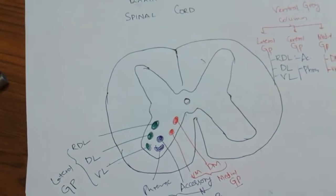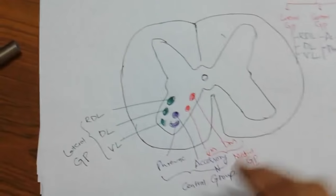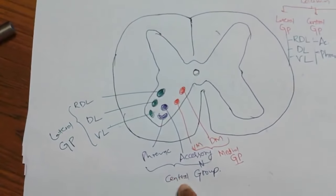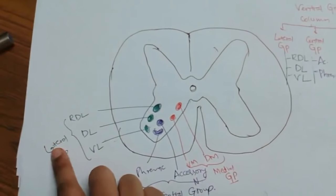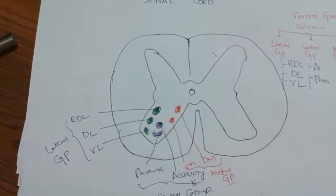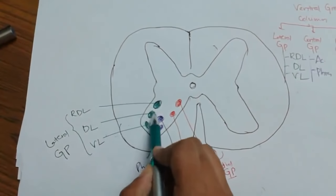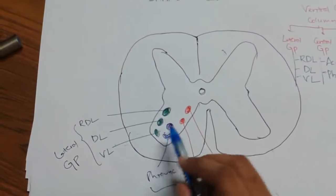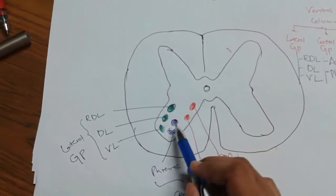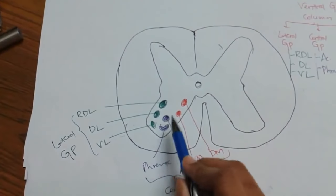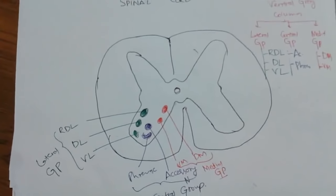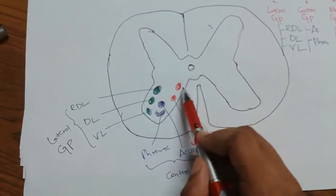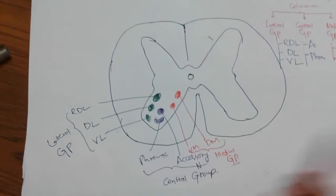So the ventral gray column has three divisions: lateral group, central group, and medial group. Lateral group has three divisions — retrodorsolateral, dorsolateral, and ventrolateral. Central group has two nuclei — accessory nucleus and phrenic nucleus. Medial group has two divisions — dorsomedial and ventromedial.